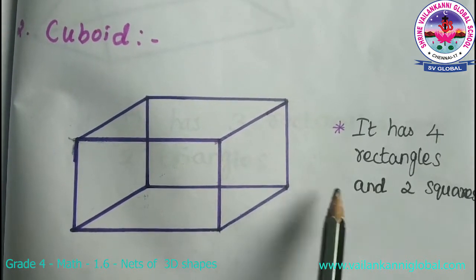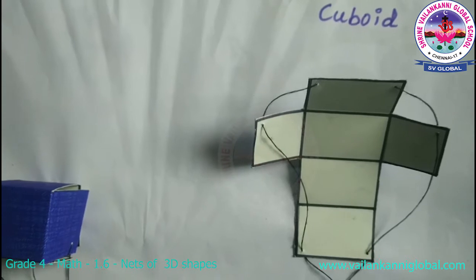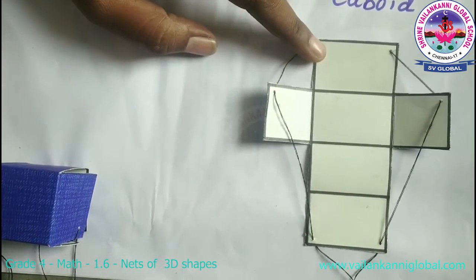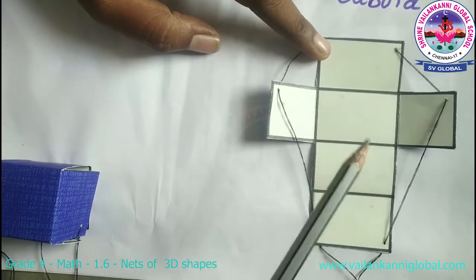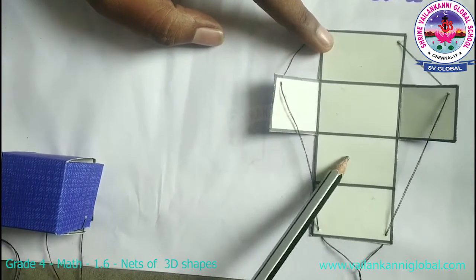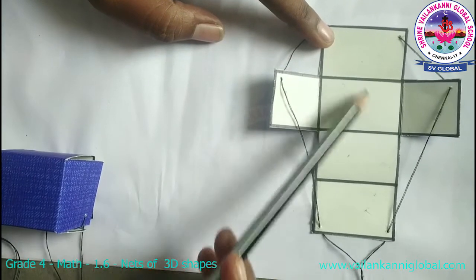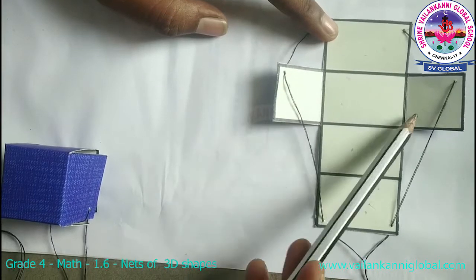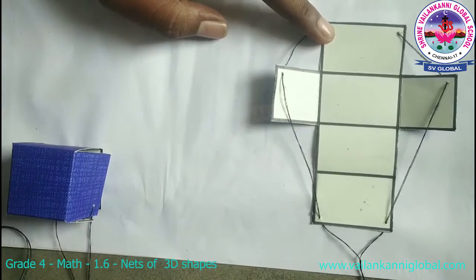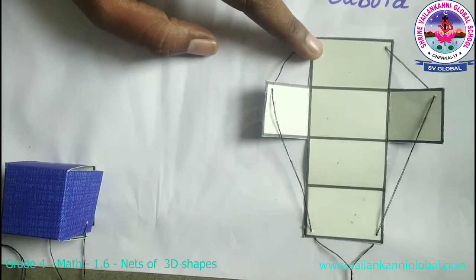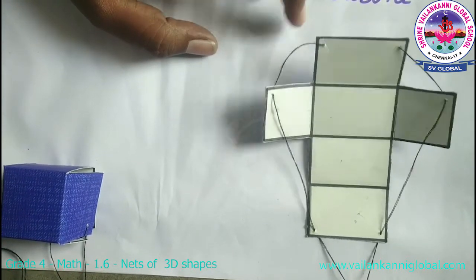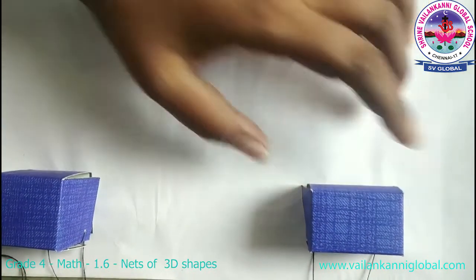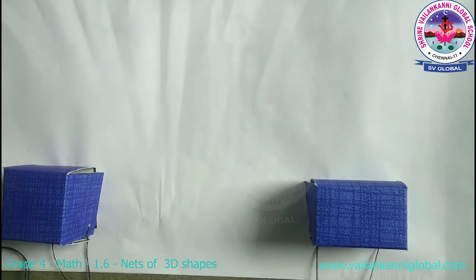The next one is cuboid. For the cuboid, it has four rectangles and two squares. This is the net of cuboid — here four rectangles: one, two, three, four, and two squares: one, two. Now we will make a cuboid shape with that 2D net. See, this is the 3D model of cuboid.